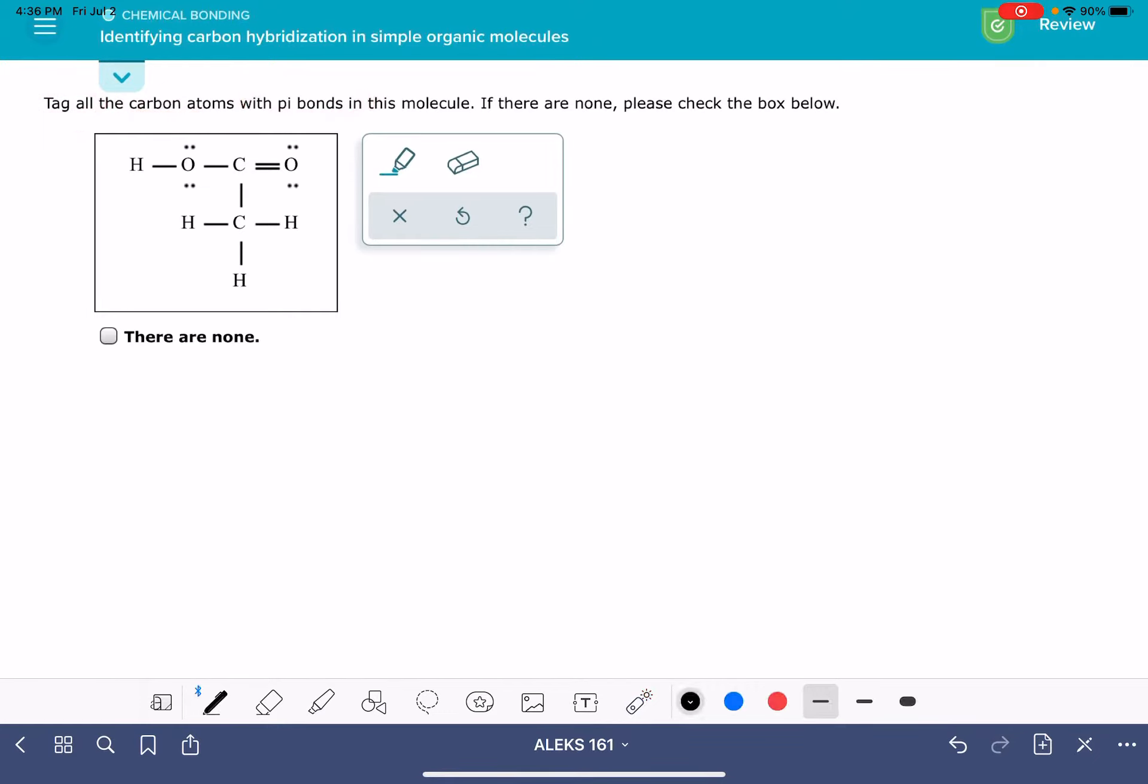A pi bond is a component of a double bond or a triple bond. So let me just write this out.